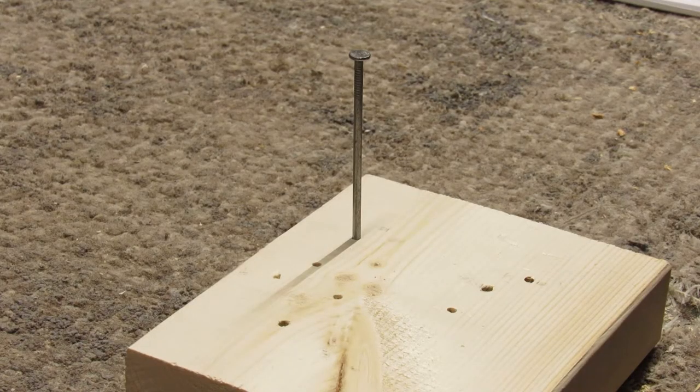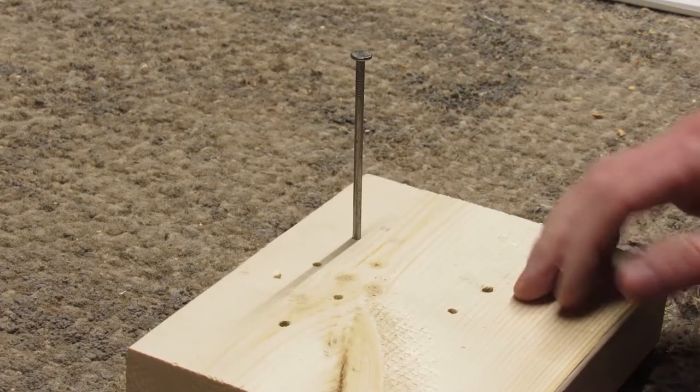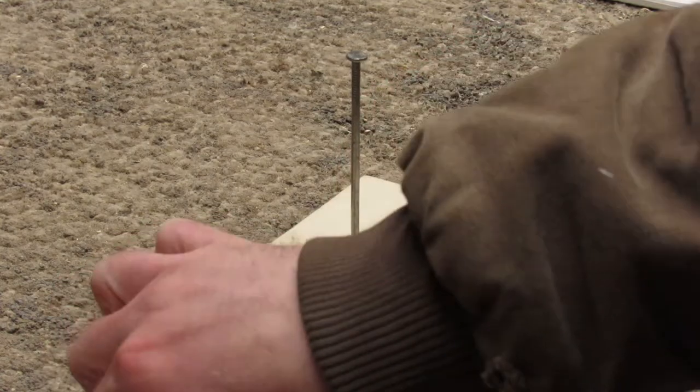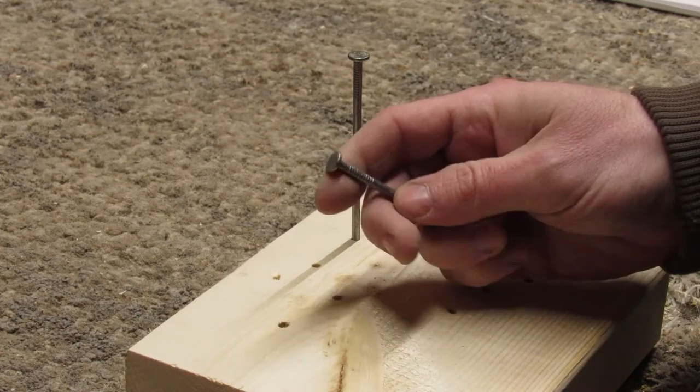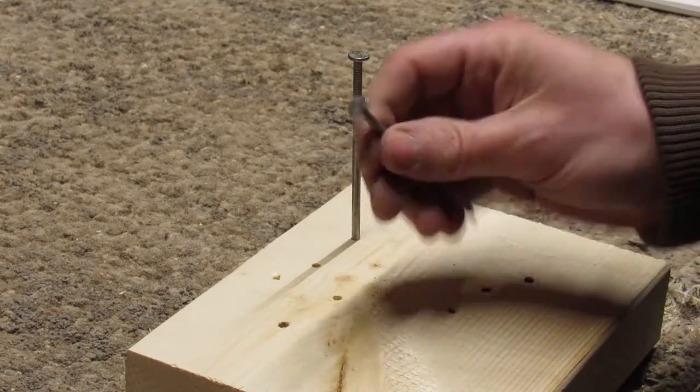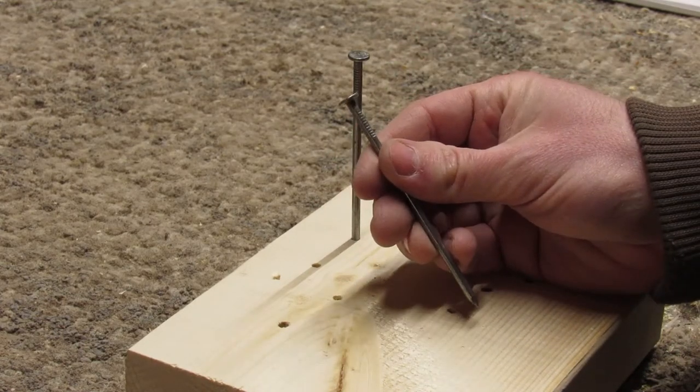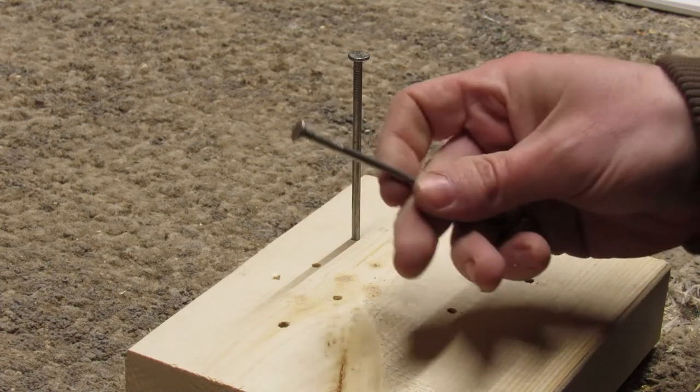For this last trick it just takes a block of wood and some nails. Now one thing about this trick is you need a nail that has a nice big round head on it like this. If you've got a finished nail that has no head on it, this trick isn't going to work.